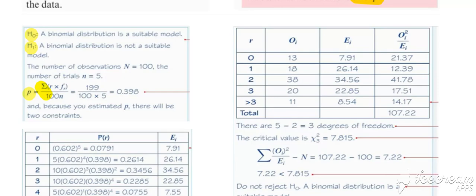This sum of r times f all over 100 is equivalent to the mean for the table of values you had, and then divide through by 5, which is your n value. Either way, you get an estimated p value of 0.398.